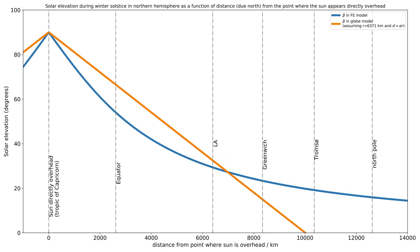I've plotted these functions for the winter solstice in the northern hemisphere. The blue line is the result you would expect from a flat earth model, and the orange line is what you would expect from a round earth.